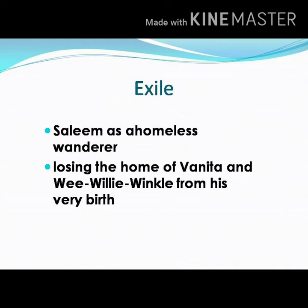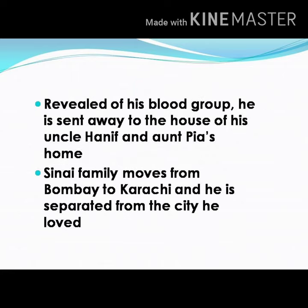This novel is also about exile. Salim is a homeless wanderer and he is continuously shifted from one place to another. His exile begins with the moment he lost the home of Vanita and Wee Willie Winkie from his very birth. In another instance, Salim's blood group is revealed and his parents realize that he is not their son, and he was sent away to the house of his uncle Hanif and aunt Pia.